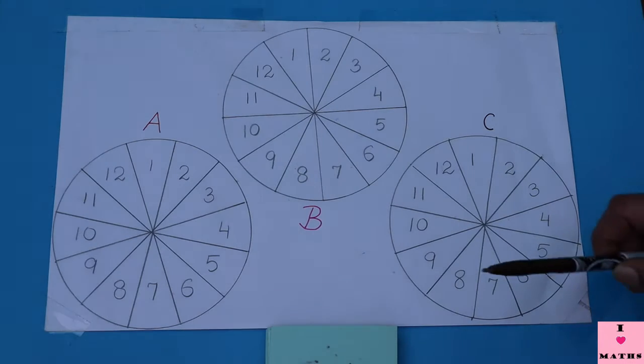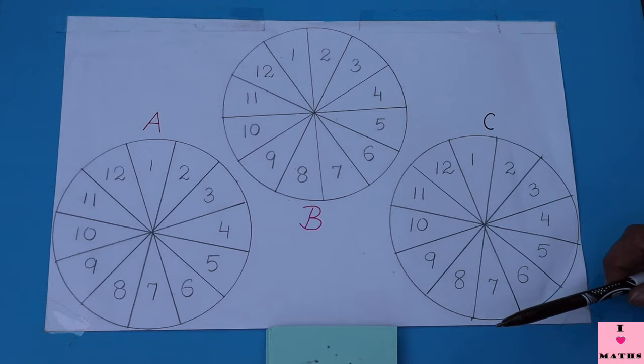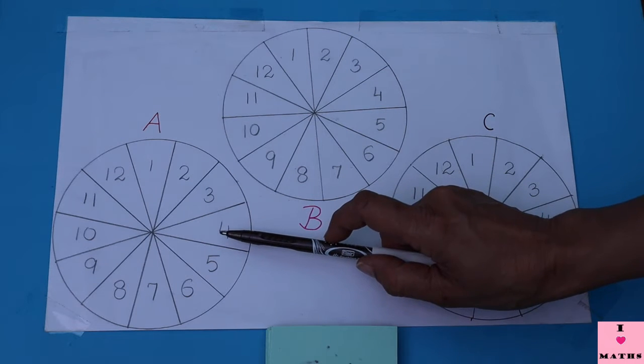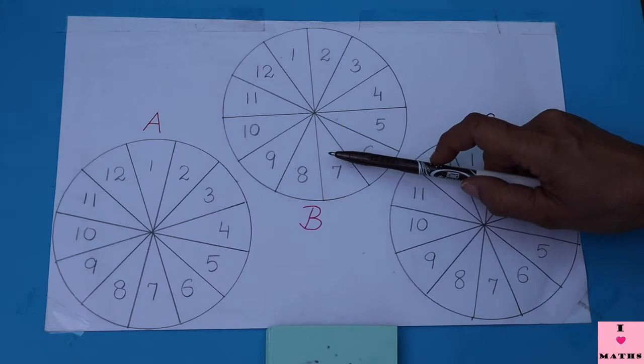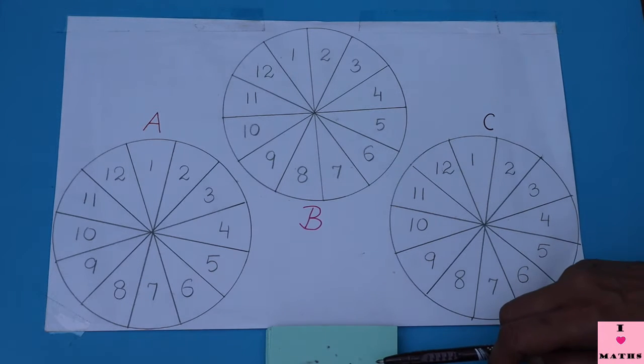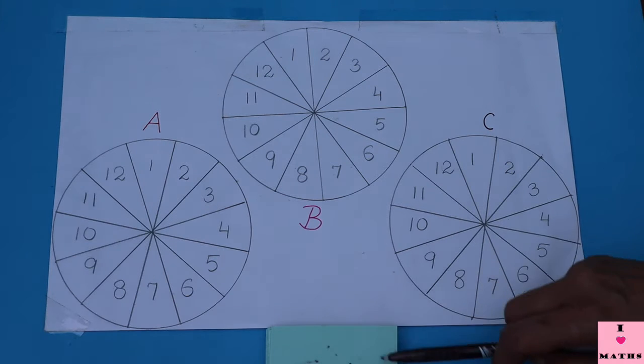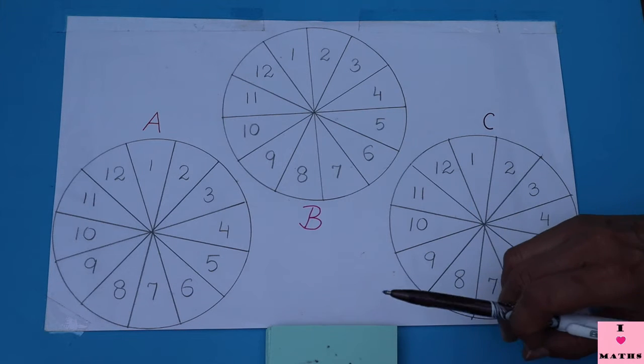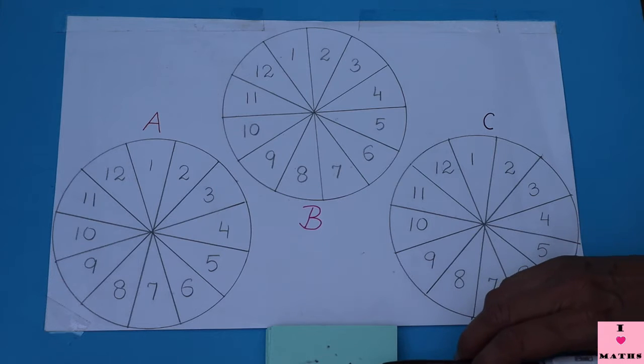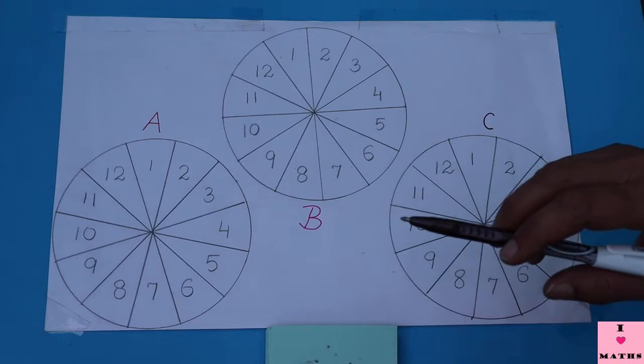So students, there are three players who are going to play this game. Player A will use a red colored pen, player B will use a pink colored pen, and player C will use a brown colored pen. These are the slips which we have made. One by one we have to pick up the slips and whatever fraction comes, we are going to color our own circle according to the given fraction.